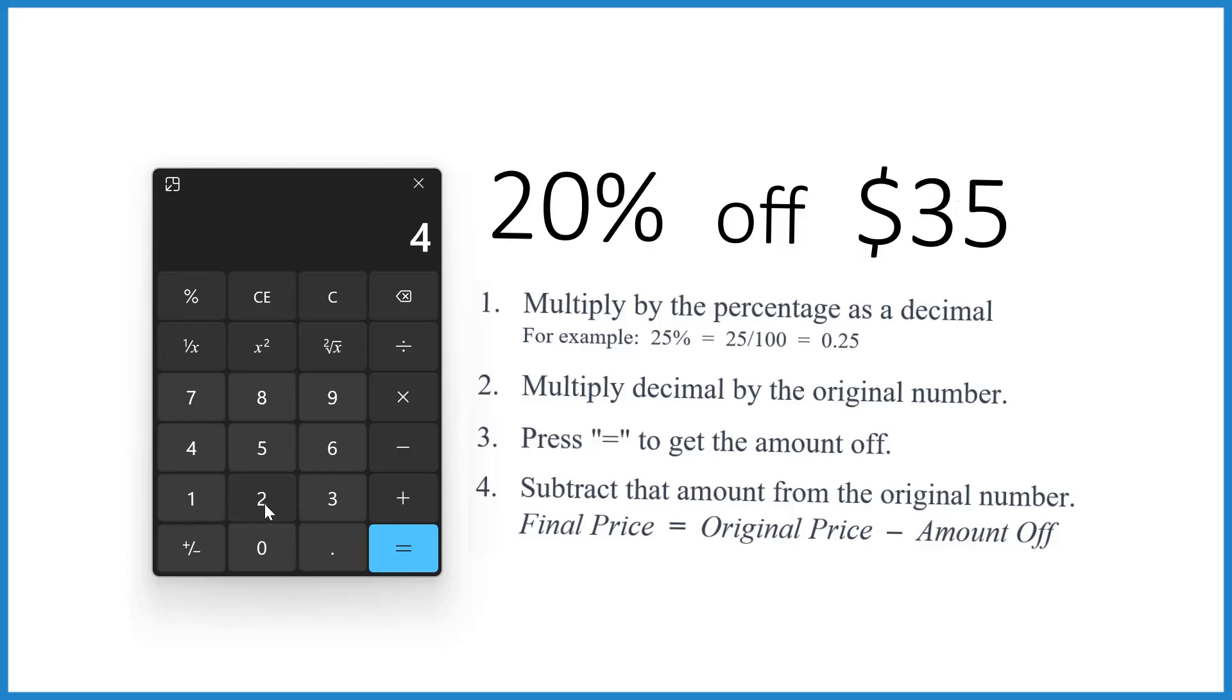So 20 divided by 100 and we get 0.2, that's our decimal. And so we want to multiply that 0.2 by our original number. So 0.2 times the original dollar amount is 35.